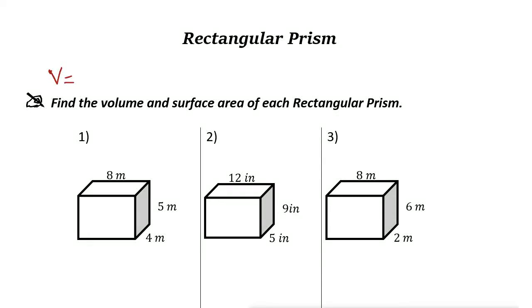Rectangular prism. A rectangular prism is a solid three-dimensional object with six rectangular faces, like these shapes that you can see here.